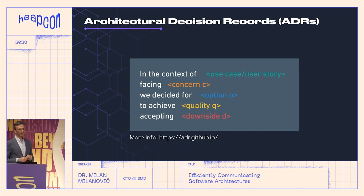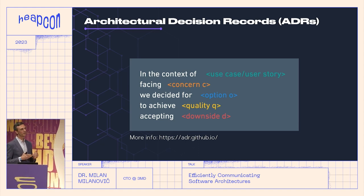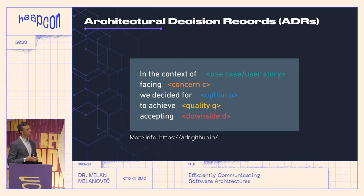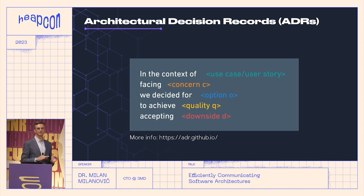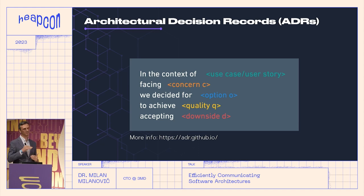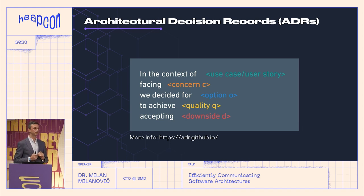The other type are architectural decision records — lightweight documents usually stored in source code near the topics they describe. These documents capture important architectural decisions in some context. We want to say: in this context, facing something, we decided for this option to achieve something and accepted some downsides. Why is this very important? Because people who are here now or who will come later will ask why you selected this. If you have architectural decision records, they can go and check why you selected those options. Very, very important document.